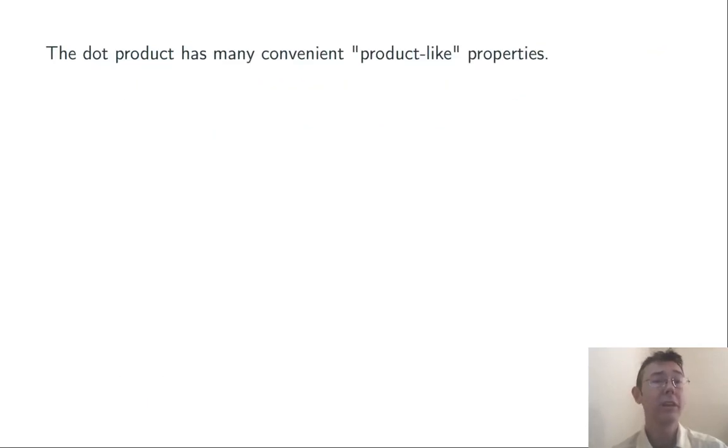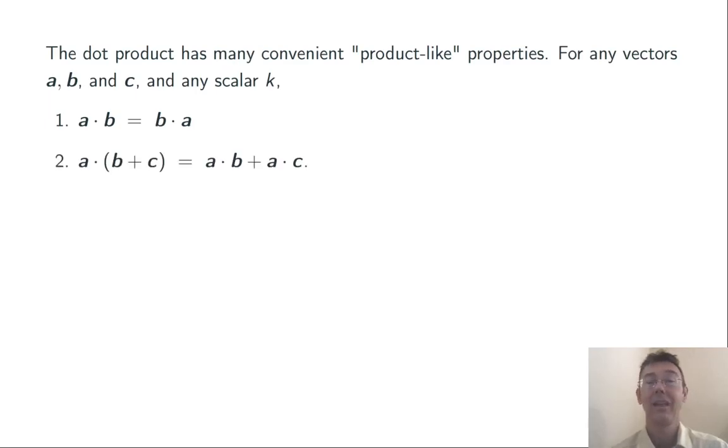The dot product does have many of the same properties, however, as the multiplication of real numbers. Here's a few of them. First of all, the dot product is commutative. A · B is always B · A. It distributes. A · (B + C) = A · B + A · C.